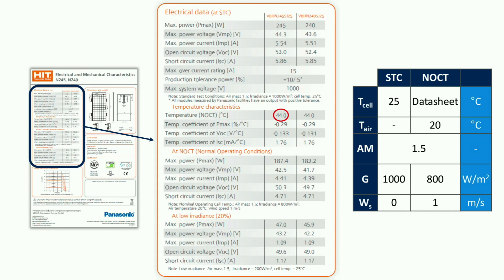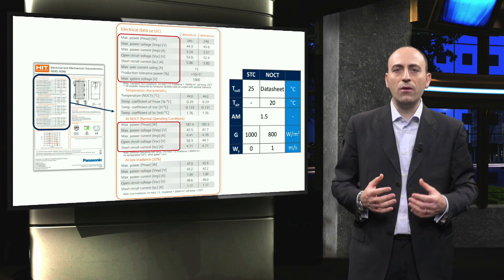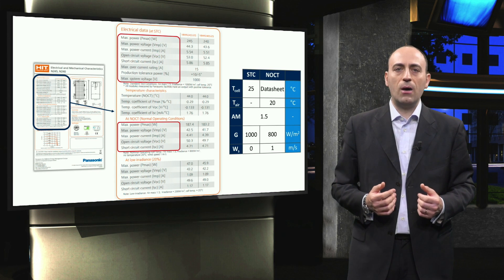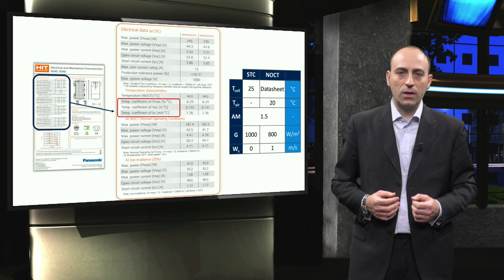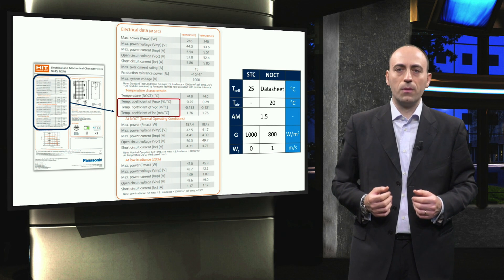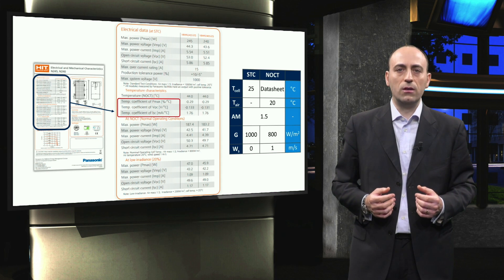Having defined both the STC and NOCT, let's focus on the electrical data of the module: the power, the voltage and the current at the maximum power point, the open-circuit voltage, and the short-circuit current. For the STC, also the maximum current and system voltage are reported for safety reasons, as well as the production tolerance power. This last parameter specifies the range within which the PV module will either overperform or underperform with respect to its rated power at STC. The second table also provides temperature coefficients for the short-circuit current, open-circuit voltage, and maximum power. With these coefficients, the performance of the module can be evaluated when the module operates at temperatures other than the NOCT.